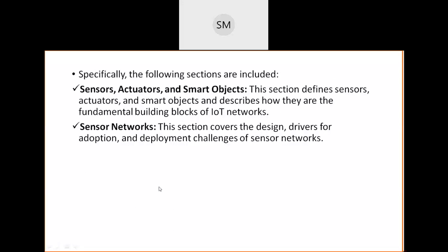We are going to study two main topics: sensors, actuators, and smart objects. This section will define what sensors are, different types and categories of sensors, actuators, and smart objects, and will explain how these are foundational building blocks of any IoT network. The next main topic is sensor networks - a network of interconnected sensors transmitting the data they generate.